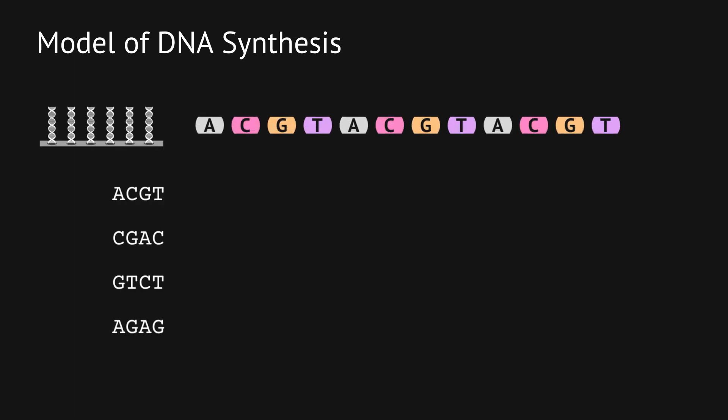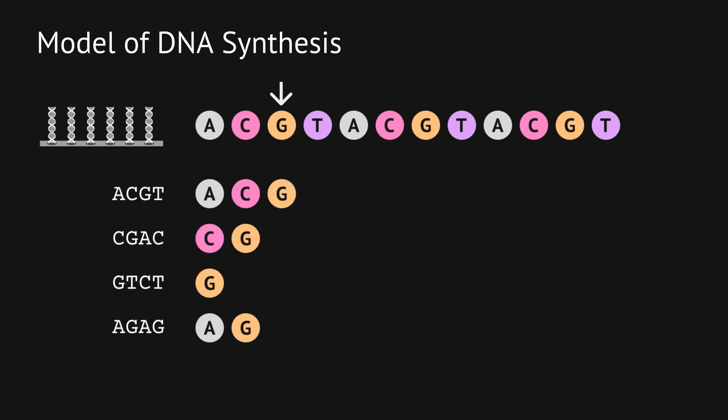Let me walk you through an abstract model of the synthesis process. Let's say that we want to create these four strings. The machine is programmed to go through a super sequence, adding one character at a time to the strings. We first add an A to some of the strings, then we add a C to some others, and then a G and so on. We can create all possible strings as long as the machine runs for enough steps.